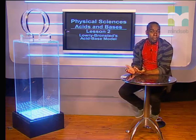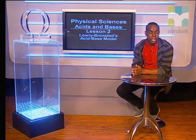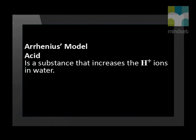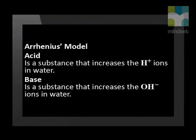Hello Grade 12s. Welcome back to this series on acids and bases. In this lesson, we will focus on the definition of an acid and a base according to the Bronsted-Lowry model. In our previous lesson, we learned that according to the Arrhenius model, an acid is a substance that increases the H⁺ ions in water, and a base is a substance that increases the OH⁻ ions in water.